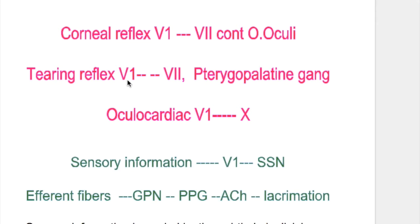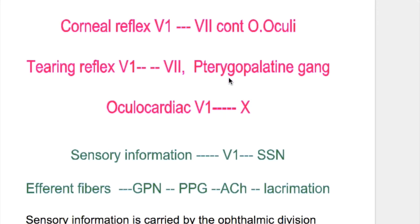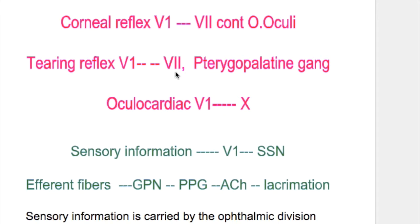The tearing reflex has the ophthalmic division as the afferent and the seventh cranial nerve as the efferent. It relays in the pterygopalatine ganglion and then causes secretion of tears.